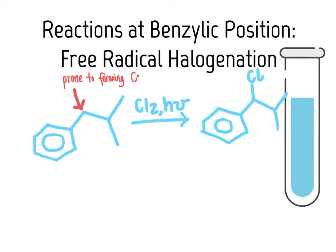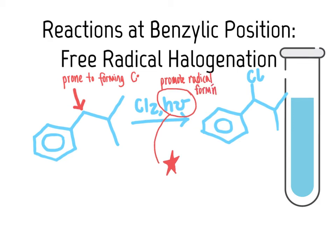Thinking back to when we learned about free radical halogenation of alkanes, we talked about how that reaction requires light and heat. Light and heat promotes the formation of the necessary radicals — specifically, it provides the energy required to break the chlorine-chlorine bond in the initial step of the mechanism, creating chlorine radicals needed to initiate the process.